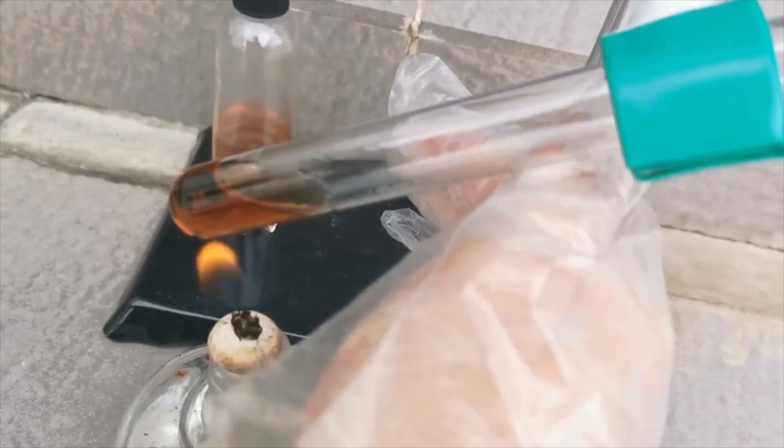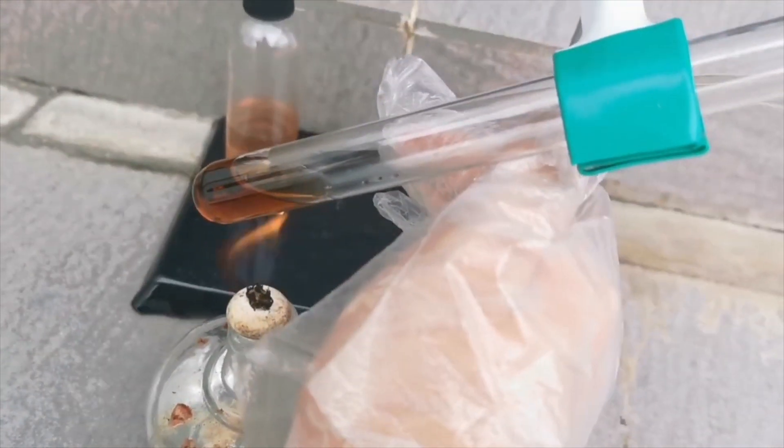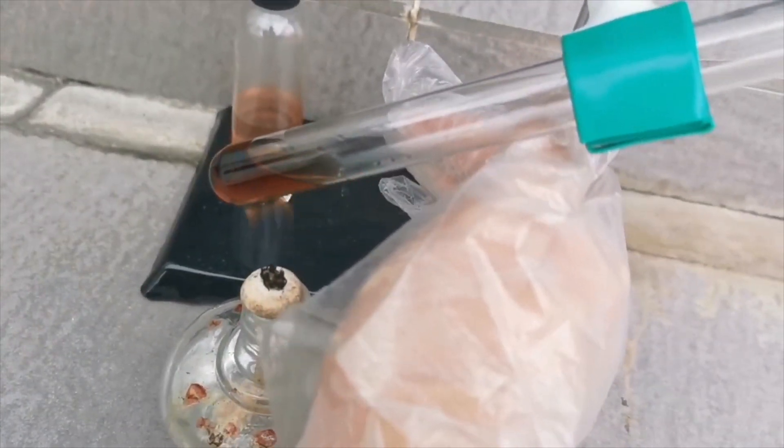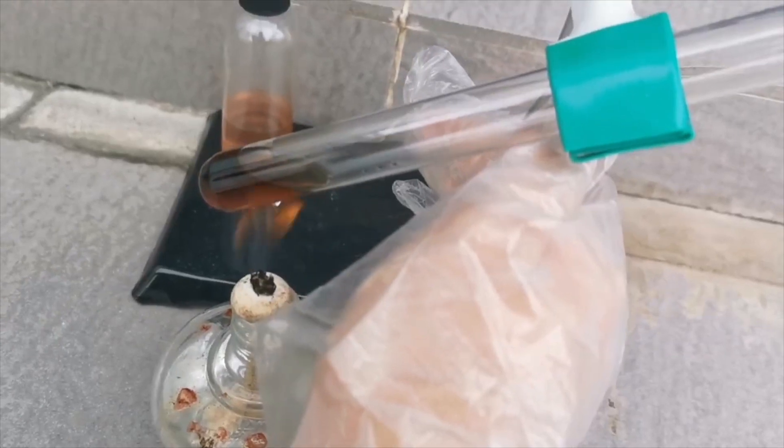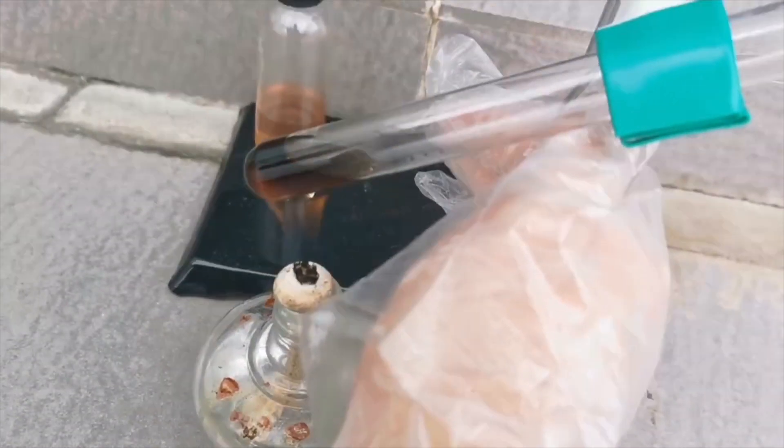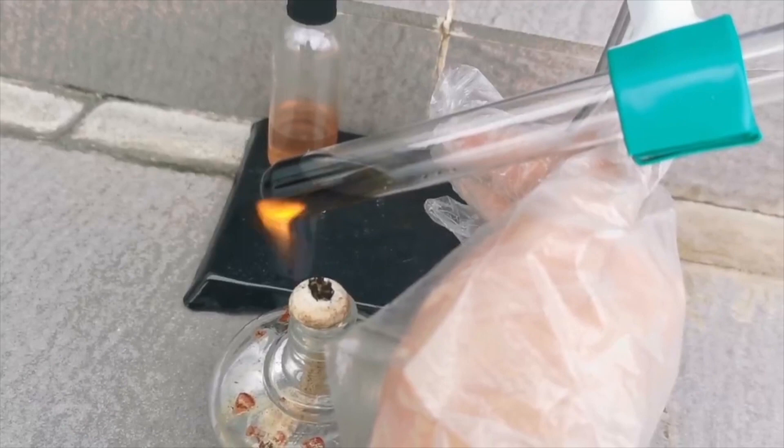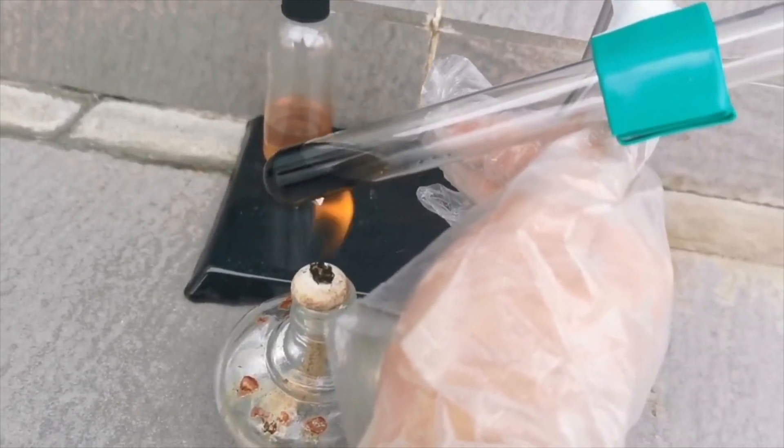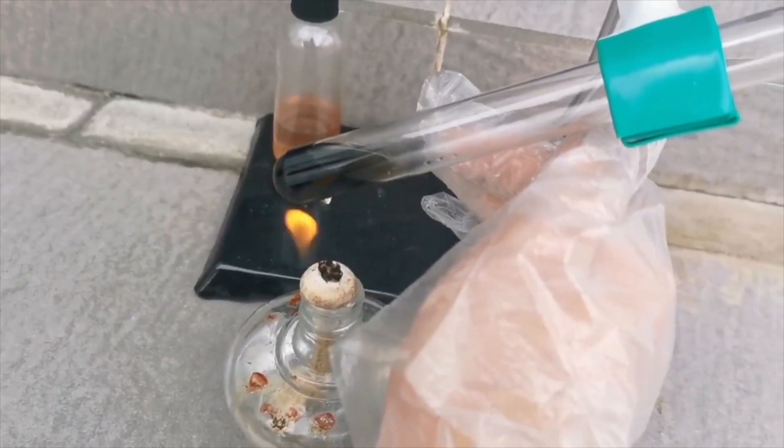A few minutes later, the acid started changing color, first to yellow, then brown, and finally black. The hot concentrated sulfuric acid is an extremely strong oxidizer, and oxidizes the organic pigments to carbon and carbon dioxide, while producing sulfur dioxide and water.